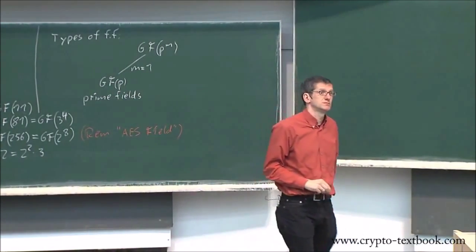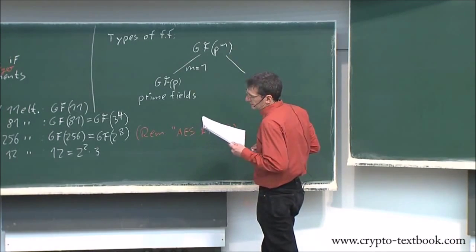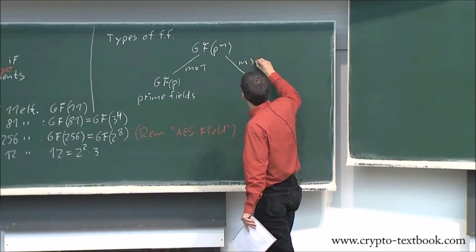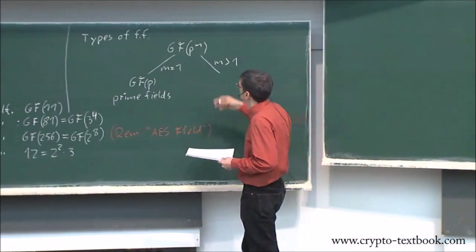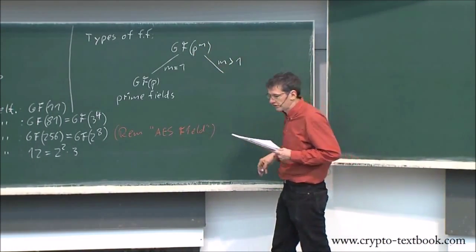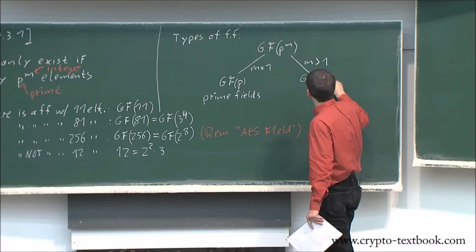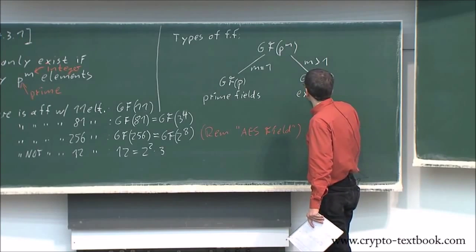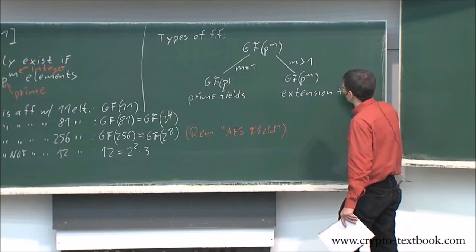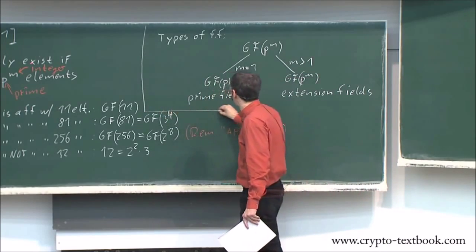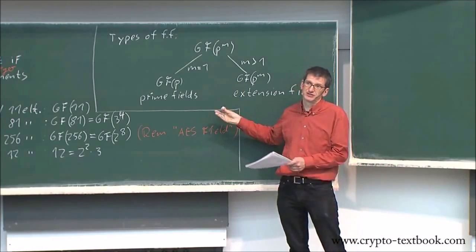On the other side, the most broad classification is if M is 2, 3, 4, 5, and so on — if it's an integer larger than one — then we have fields GF(p^m) and they are called extension fields.